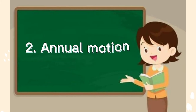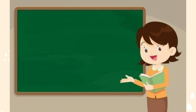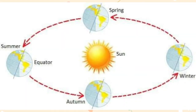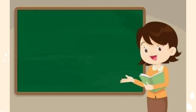Number 2: Annual motion. Annual motion is the motion of the earth in its orbit around the sun. It is called annual motion because it takes one year for the earth to make one complete orbit. To be exact, it takes earth 365 days, 5 hours, 48 minutes, and 45 seconds to travel around the sun.